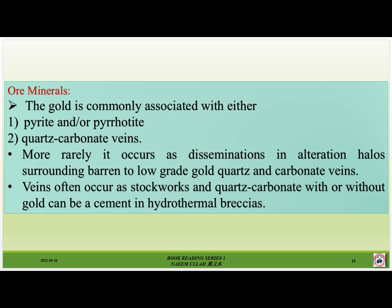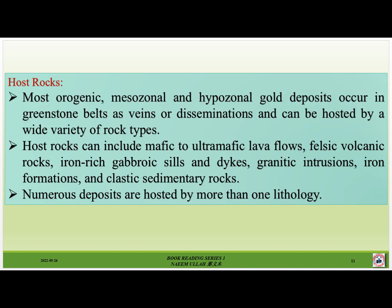More rarely, gold occurs as disseminations in alteration haloes surrounding barren to low-grade gold quartz-carbonate veins. Veins often occur as stockworks, and quartz-carbonate with or without gold can be a cement in hydrothermal breccias. Most orogenic mesozonal and hypozonal gold deposits occur in greenstone belts as veins and disseminations, and can be hosted by a wide variety of rock types, including mafic to ultramafic lava flows, felsic volcanic rocks, iron-rich gabbroic sills and dikes, granitic intrusions, iron formations, and clastic sedimentary rocks. Numerous deposits are hosted by more than one lithology.